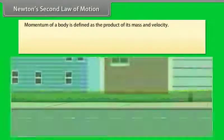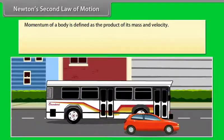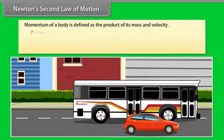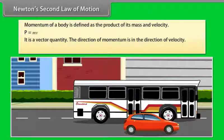Newton's second law of motion: First, we will talk about momentum. Momentum of a body is defined as the product of its mass and velocity: P = M × V. It is a vector quantity. The direction of momentum is in the direction of velocity. Its SI unit is kilogram meter per second.